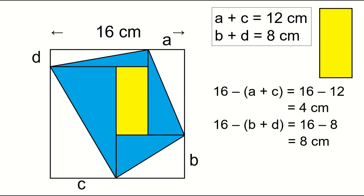So, the area of the yellow rectangle is 4 times 8, which equals 32 square centimeters.